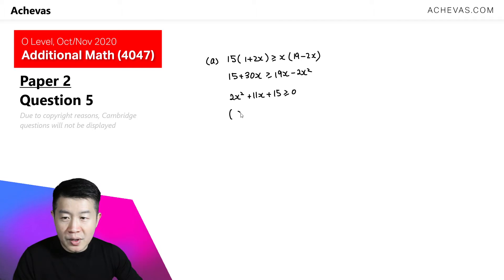Further factorizing this, we will have x plus 3 and 2x plus 5. This is bigger or equal to 0.